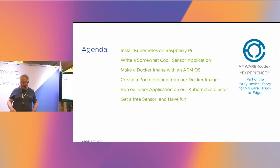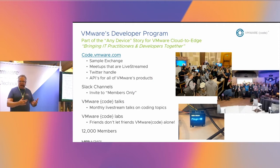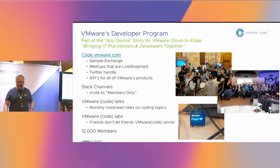This is the Code Booth. VMware Code is a 20,000-person community. We have Slack channels, we're there answering questions. We do a lot of Kubernetes. VMware has products on AWS from Kubernetes to Wavefront to CloudHealth to Heptio.